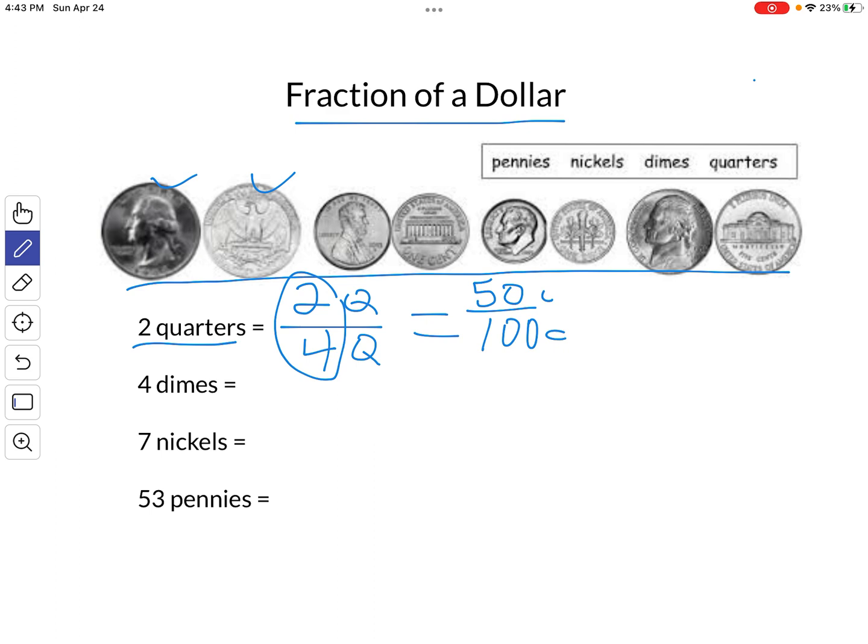Four dimes. That's four dimes out of how many dimes it takes to make a dollar? Ten dimes. So we've got four dimes out of ten dimes. Four tenths. Also, how much are the dimes worth? Forty cents out of the hundred cents that it takes to make a dollar. So four dimes is also equal to forty hundredths of a dollar.